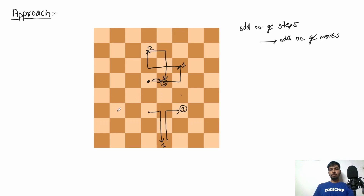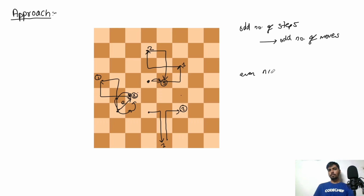To reinforce this: if the knight travels to a position two steps away, it takes two moves — one move to an intermediate position, then a second move to the destination. So even steps require even moves. In summary, odd number of steps needs odd number of moves, and even number of steps needs even number of moves.